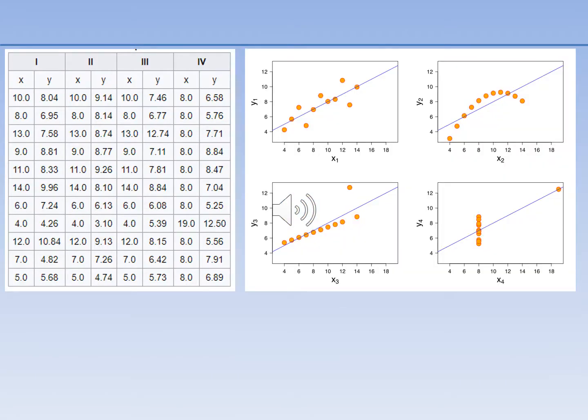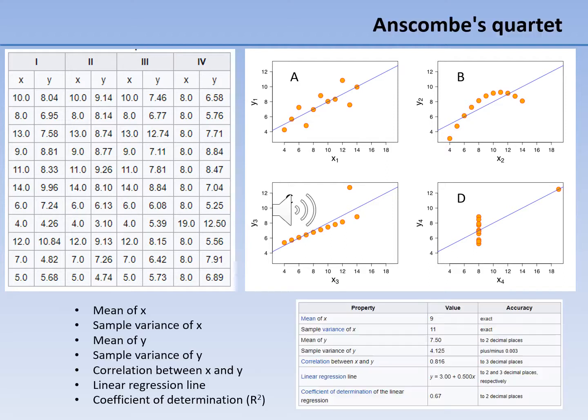Anscombe's quartet is comprised of four data sets that have nearly identical statistics. The first scatterplot on the top left appears to show two variables that are correlated and follow the assumption of normality. The second graph on the top right shows a non-normal distribution, highlighting the importance of looking at a set of data graphically.